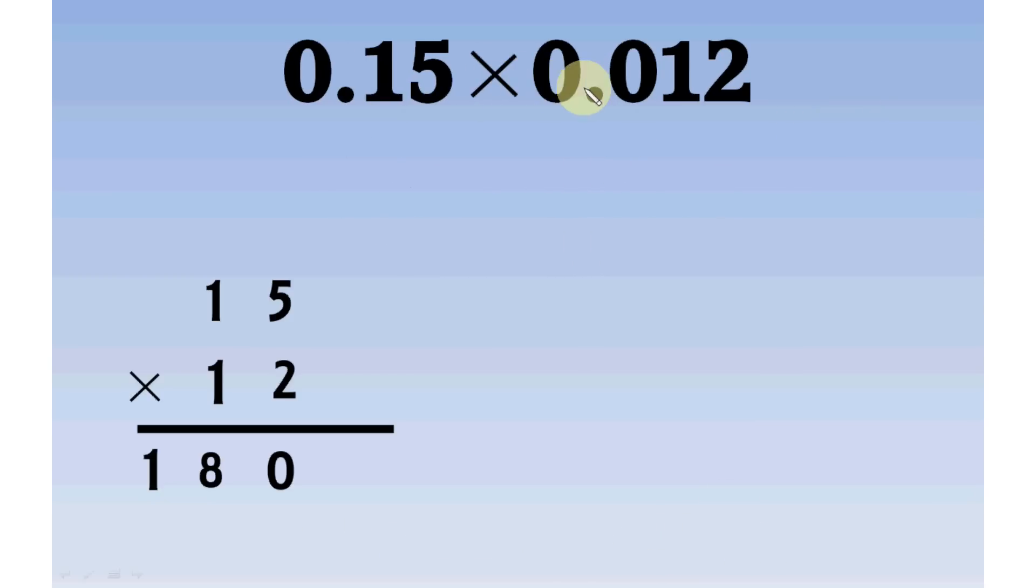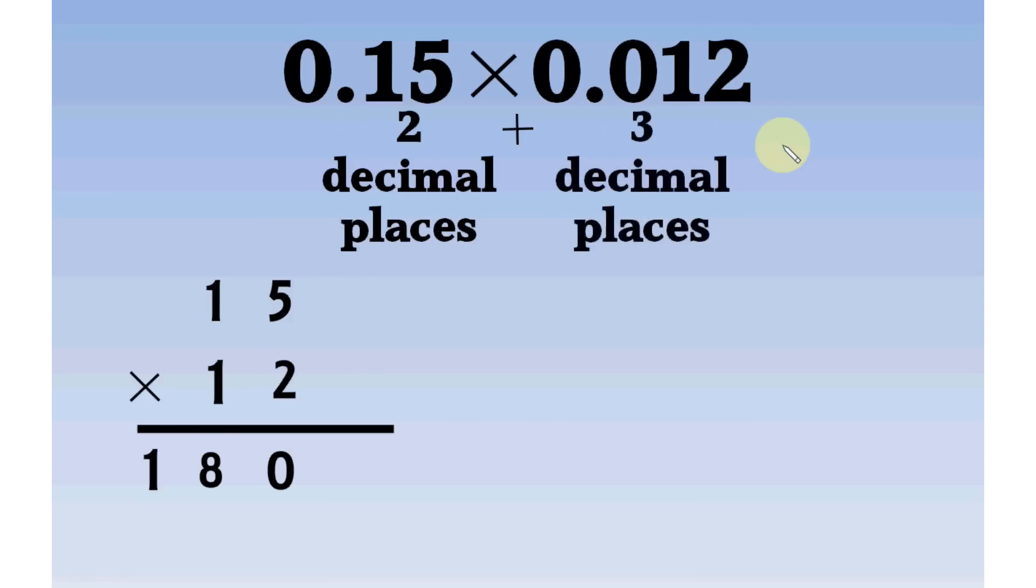0.15 multiplied by 0.012. 2 digits after decimal here, 3 decimal places here. So, answer would have 2 plus 3 equals 5 decimal places. Means, 5 digits after decimal. So, we add 2 zeros before it. Please, don't add zeros after the product, because that would change the value. Adding zeros before a number doesn't change its value. So, answer would be 0.00180.